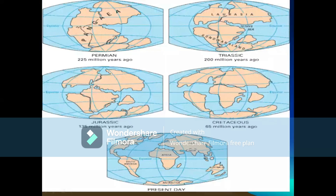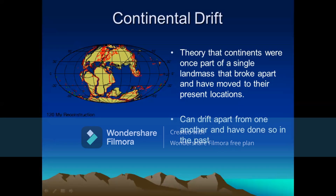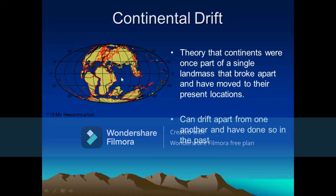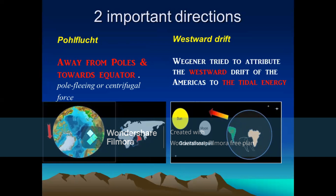In simple terms, the theory mentions that the continents were once part of a huge single landmass, which has broken apart. After breaking apart, they have moved or drifted to their present locations. So according to this theory, the continents have drifted apart from each other. What are the specific areas or directions in which they have drifted?